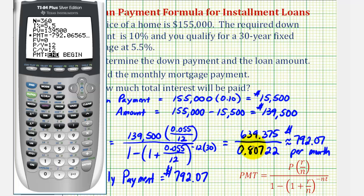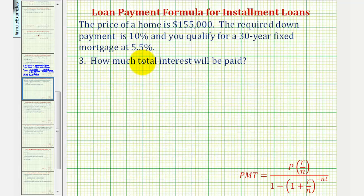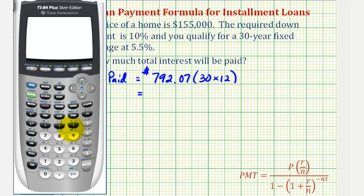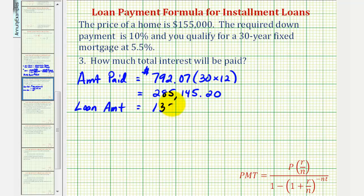For the last question, we determine how much interest is paid over the life of the loan. First, find the total amount paid: the monthly payment of $792.07 times the number of months — 30 times 12, or 360 payments. So, 792.07 times 360 gives us a total of $285,145.20 paid over 30 years. The original loan amount borrowed was $139,500.